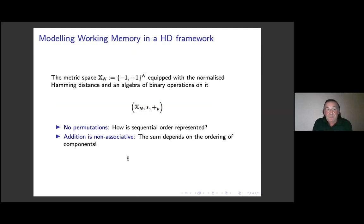What I'm going to do is a little bit different. I stick to the very typically high-dimensional framework in that I consider a matrix space of bipolar vectors of length n where n is larger than 100. I equip this matrix space with a normalized Hamming distance and I define binary operations on it. One is the component-wise multiplication. I will not talk about it today and the other one is addition. And what you see is that you do not see permutations. Given the importance of permutations for coding serial order raises then the question, how then is sequential ordering represented without these permutations? And the answer is, this is what I'm going to talk about, that the addition I define is not associative, which means that the sum depends on the ordering of the components.